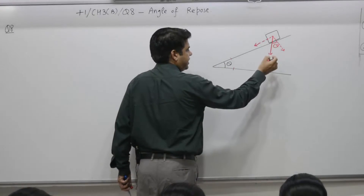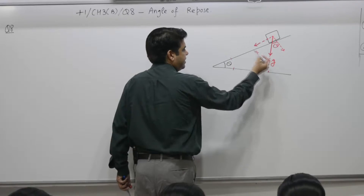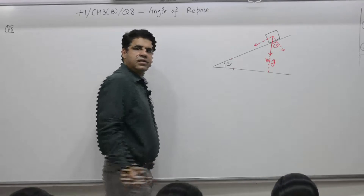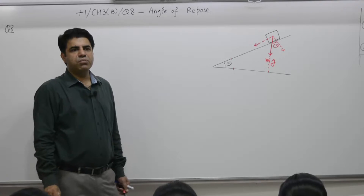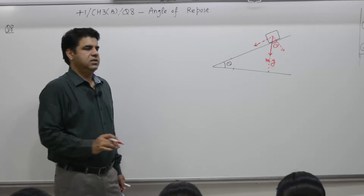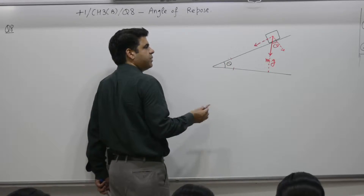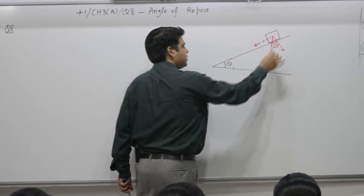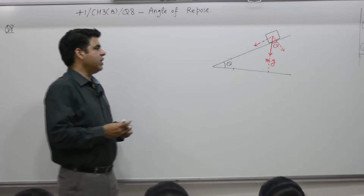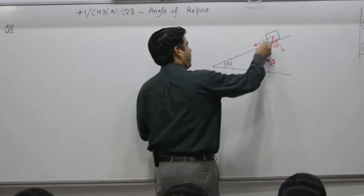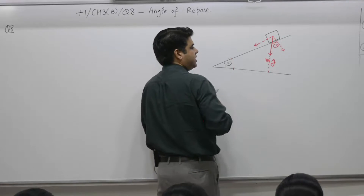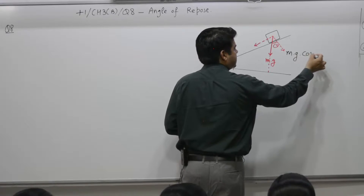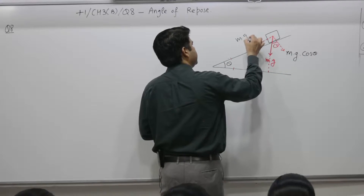Suppose this angle is 30 degrees. I can extend it: this is 90, so if this angle is 30, this angle is 60, and if this angle is 60, this angle is 30. Whatever is the angle between two lines is the same as the angle between their perpendiculars. So the angle between these two components is theta. We need to find the components of mg: one component is mg cosθ and another is mg sinθ.